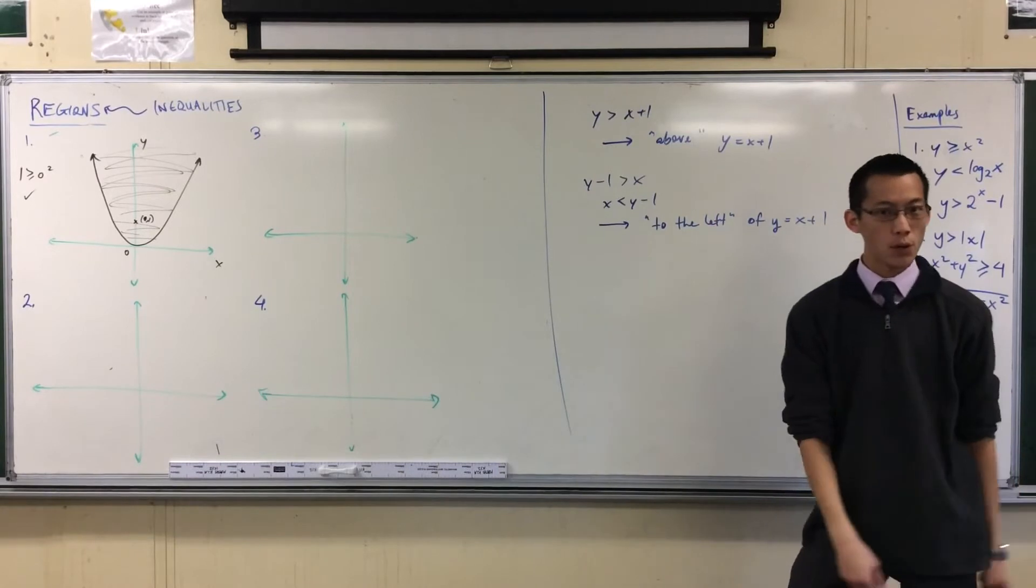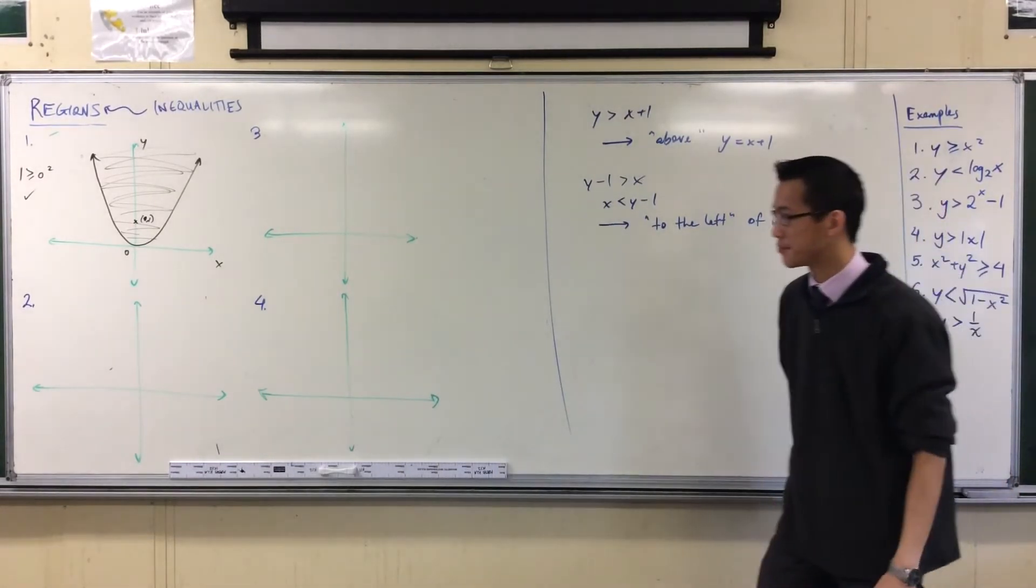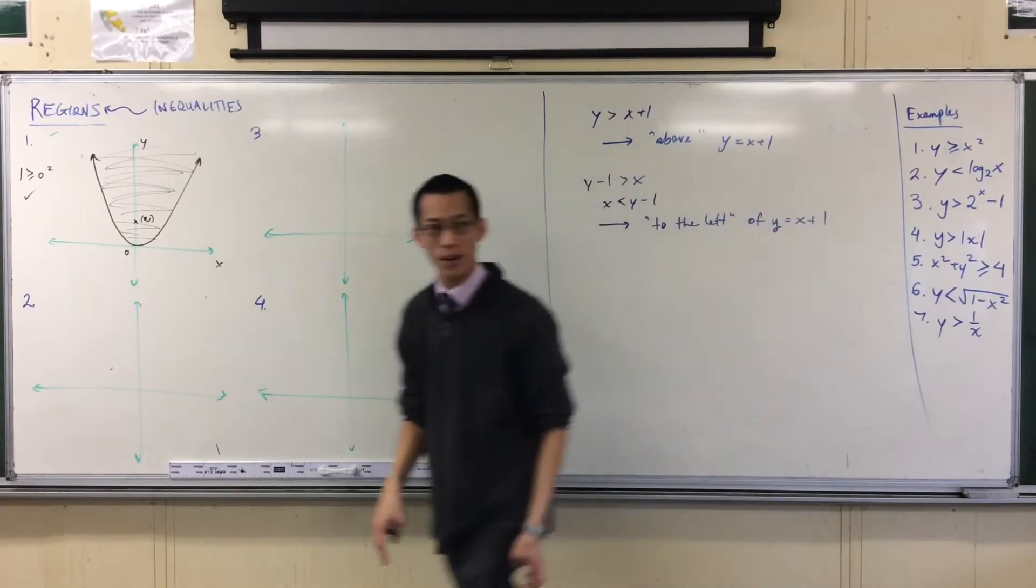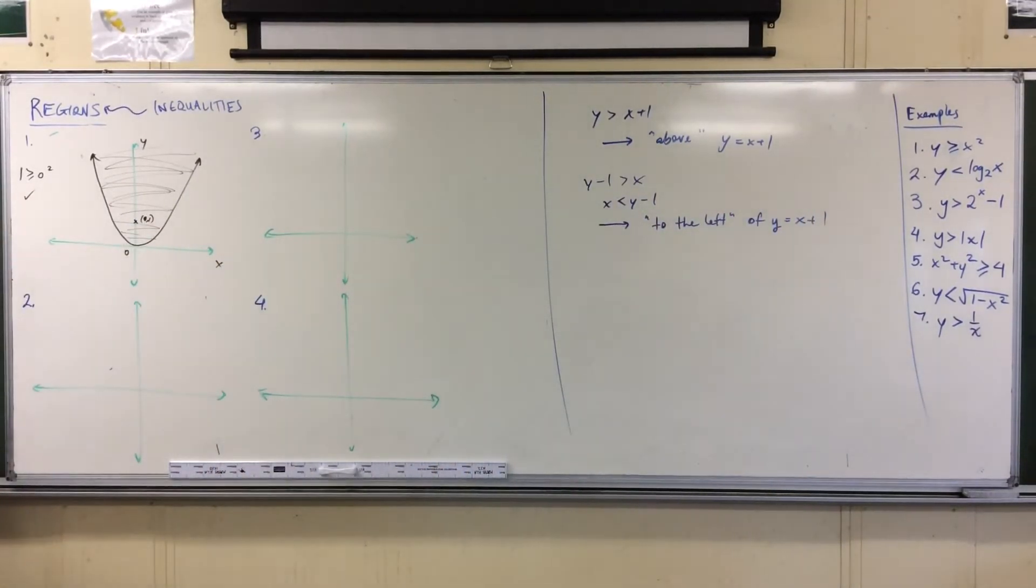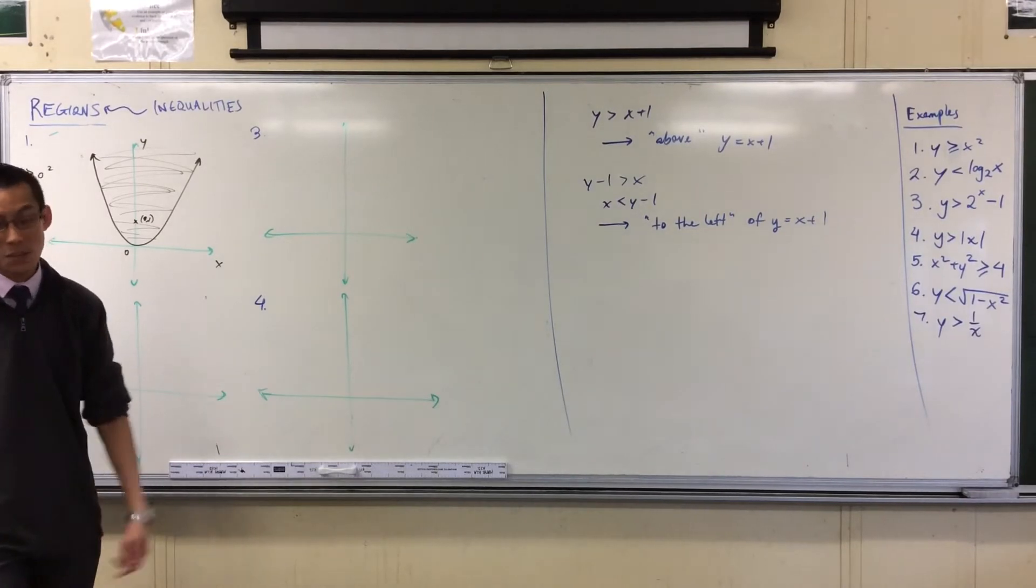And of course, if we'd tested one below, we'd find it wouldn't satisfy the inequality, so it's not that region. That was straightforward enough. Like, if you draw a set of axes but you don't label it x and y, do you get marked wrong? I guess. I'll say the same thing to you that I always say when I get a question about marking, which is, what's being assessed?